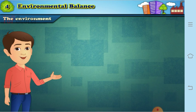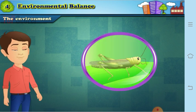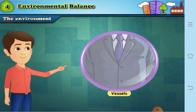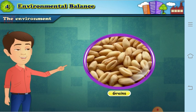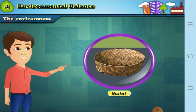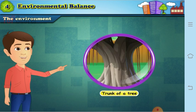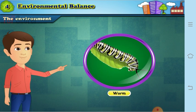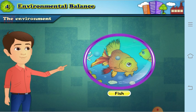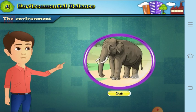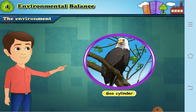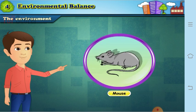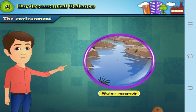Now let us look at some living and non-living things. Grasshopper, a duck, a car, vessels, coat, bus, grains, wheel, basket, book, a trunk of a tree, rain, brick, stone, worm, chameleon, fish, cow, sun, elephant, gas cylinder, eagle, egret, snake, mouse, tiger, water reservoir.